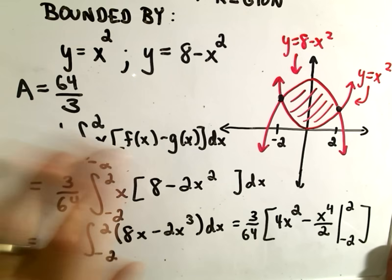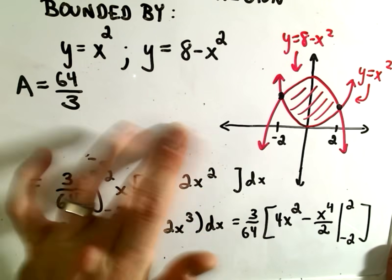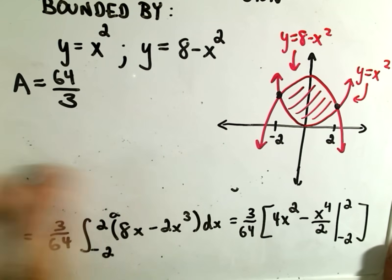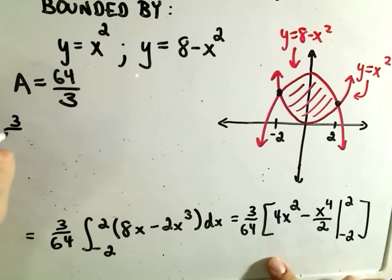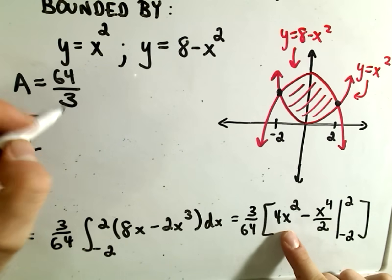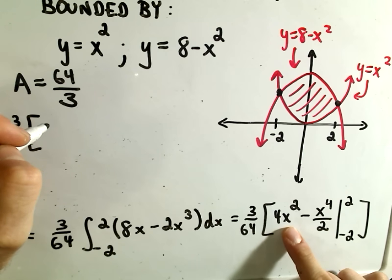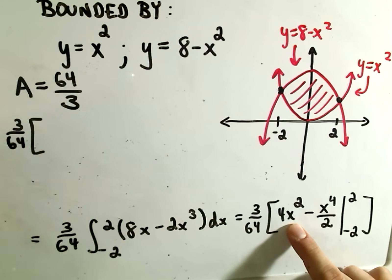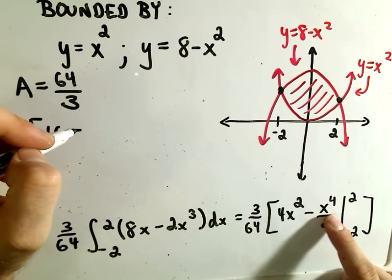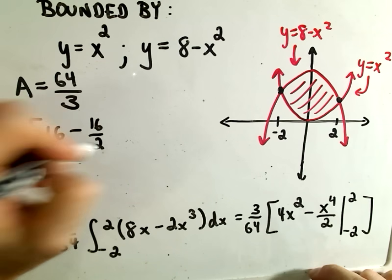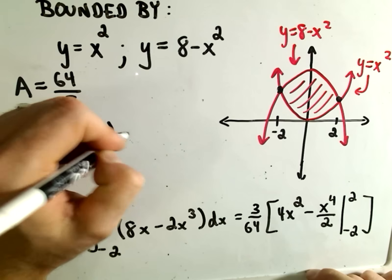Let me give myself a little more space here to simplify this stuff down. Hopefully the computations won't be too bad. We'll get 3/64. We have to plug 2 in for x. 2² is 4, 4 times 4 is 16. Minus, we'll plug 2 in: 2⁴ is 16/2, which gives us 8.